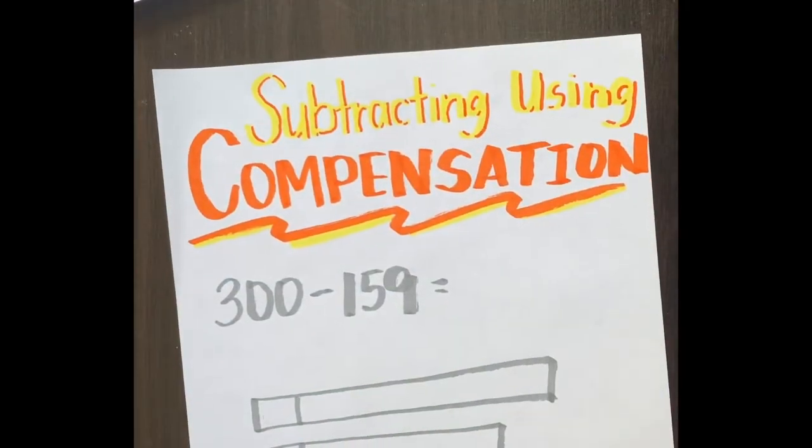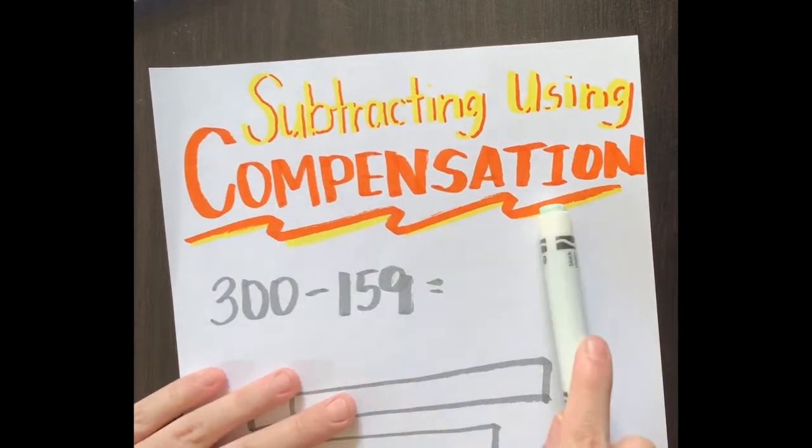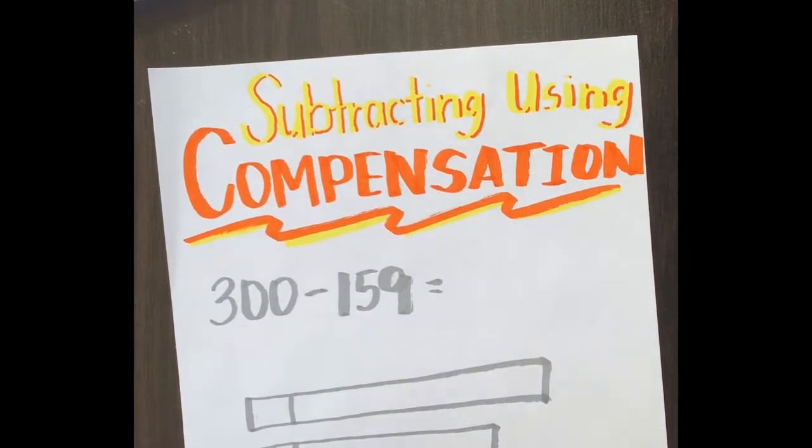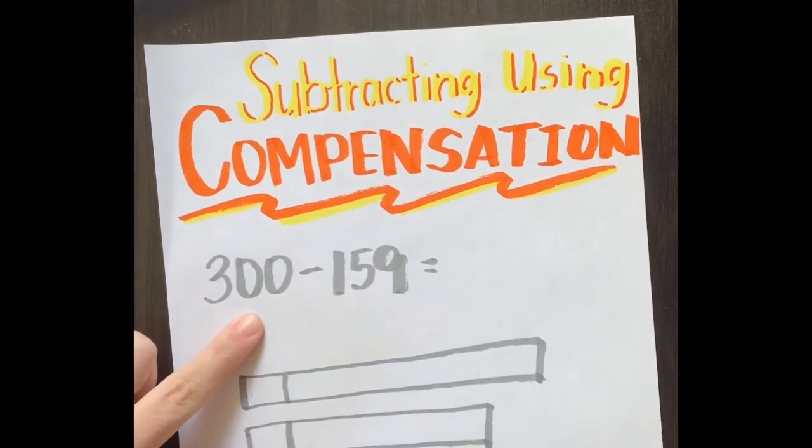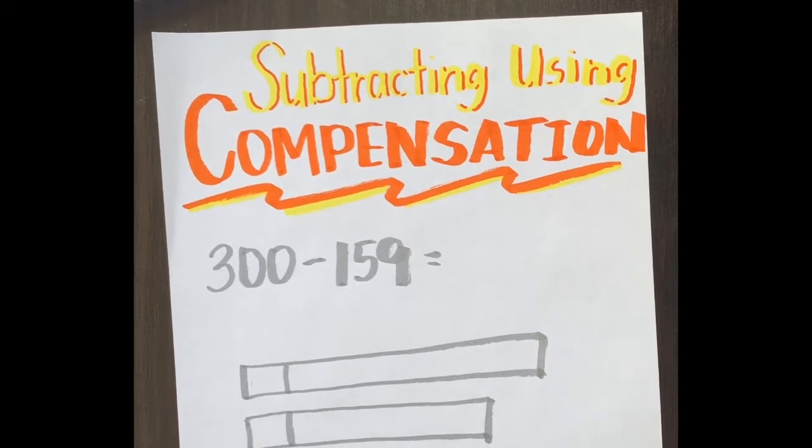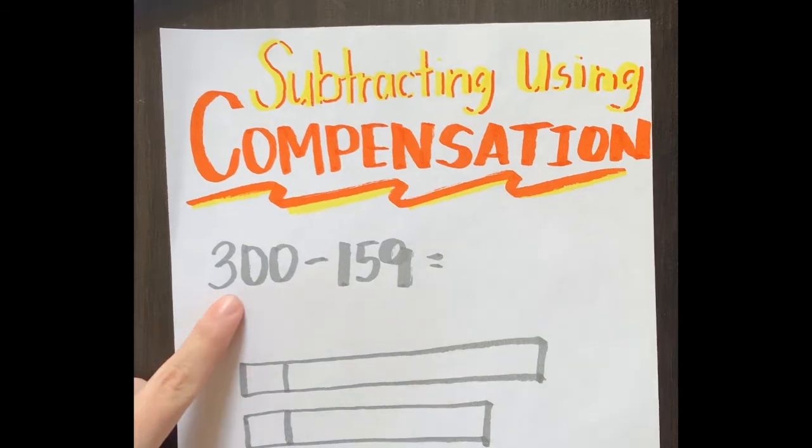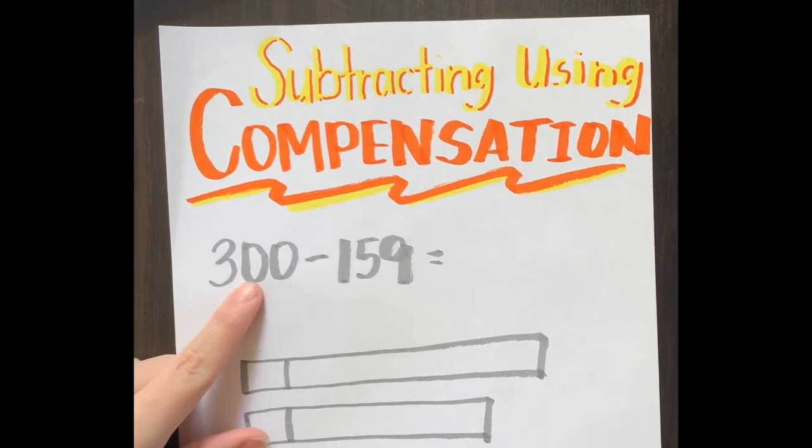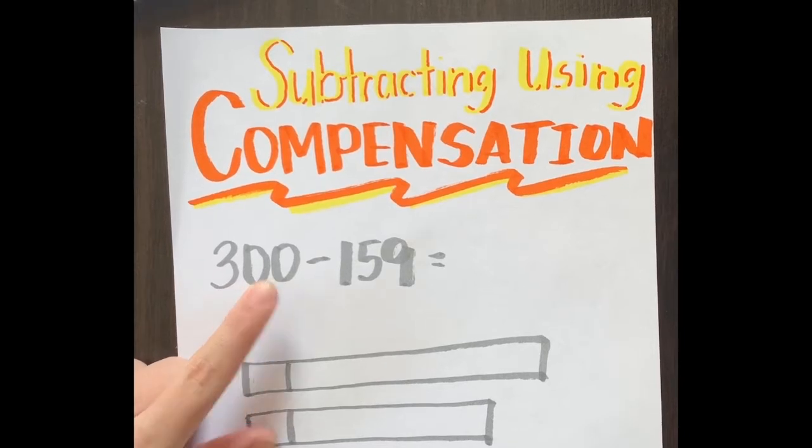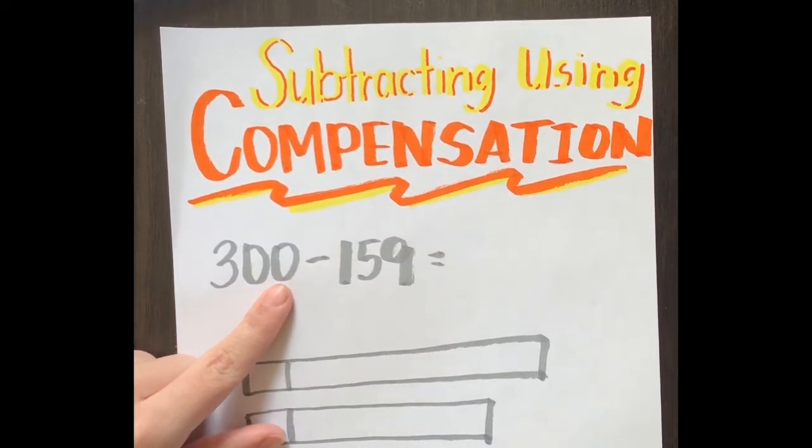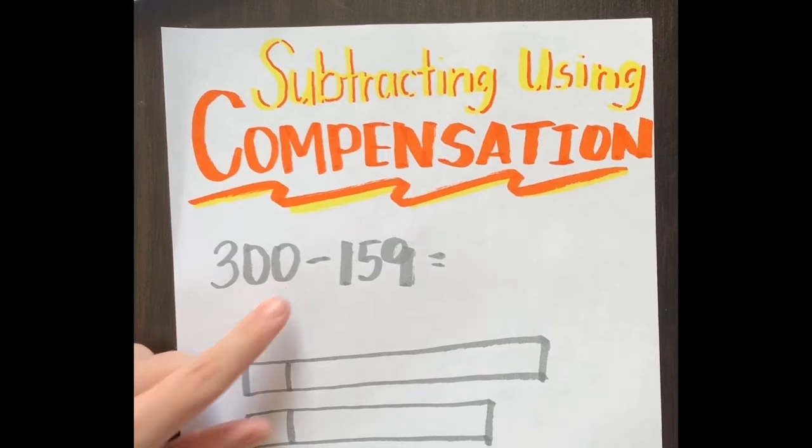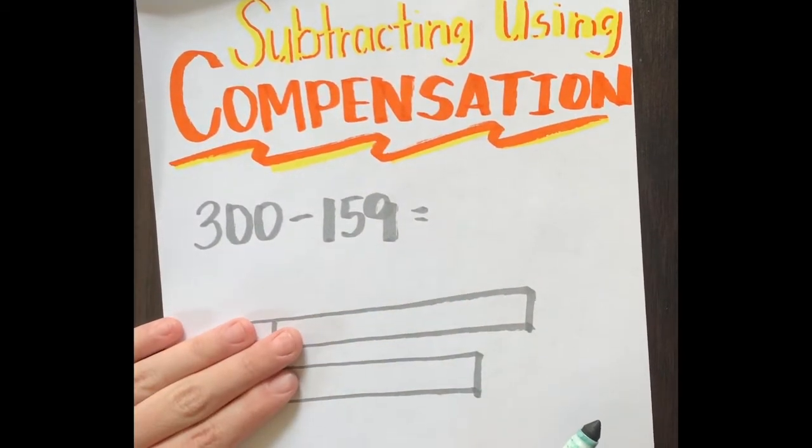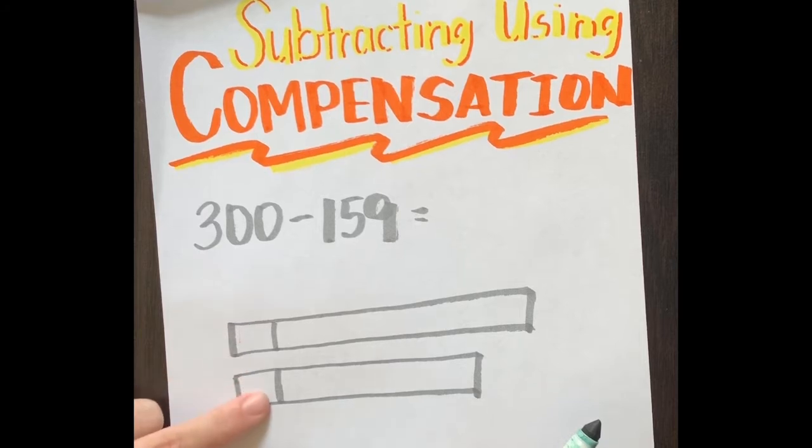The first problem is 300 minus 159. If I were solving this vertically or using a place value chart, I would need to double debundle because I have a zero in the tens place and a zero in the ones place. I don't want to do that - that's a lot of work - so I'm going to use my tapes and manipulate my numbers.